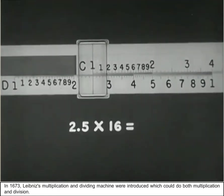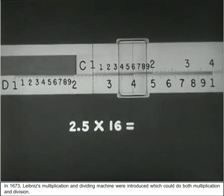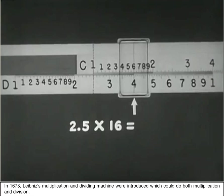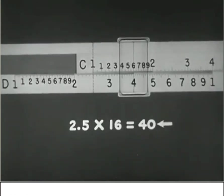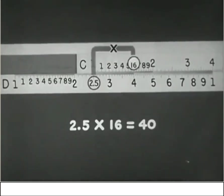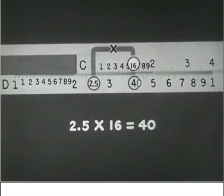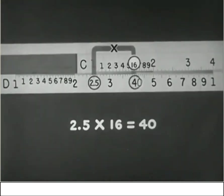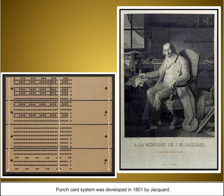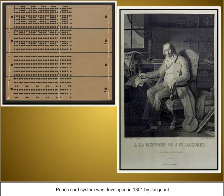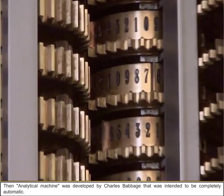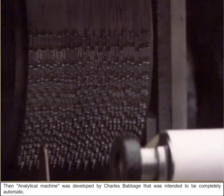In 1673, Leibniz's multiplication and dividing machine were introduced which could do both multiplication and division. The punch-card system was developed in 1801 by Jacquard. The analytical machine was developed by Charles Babbage that was intended to be completely automatic.